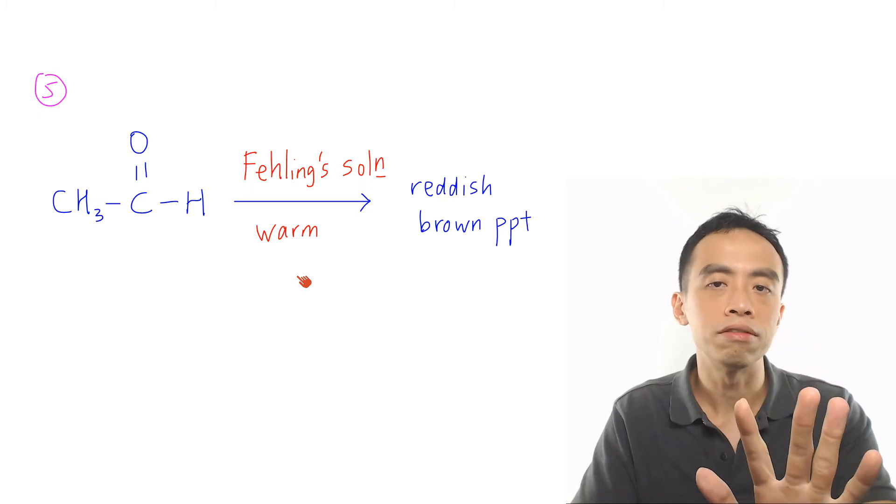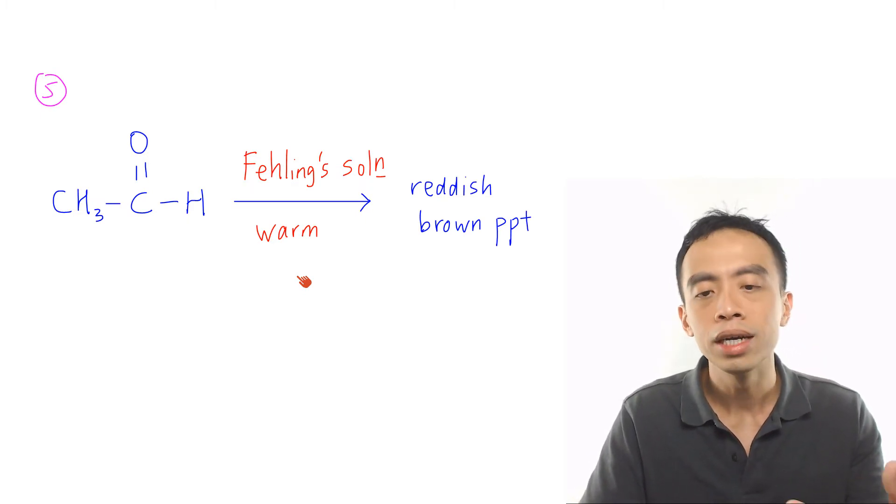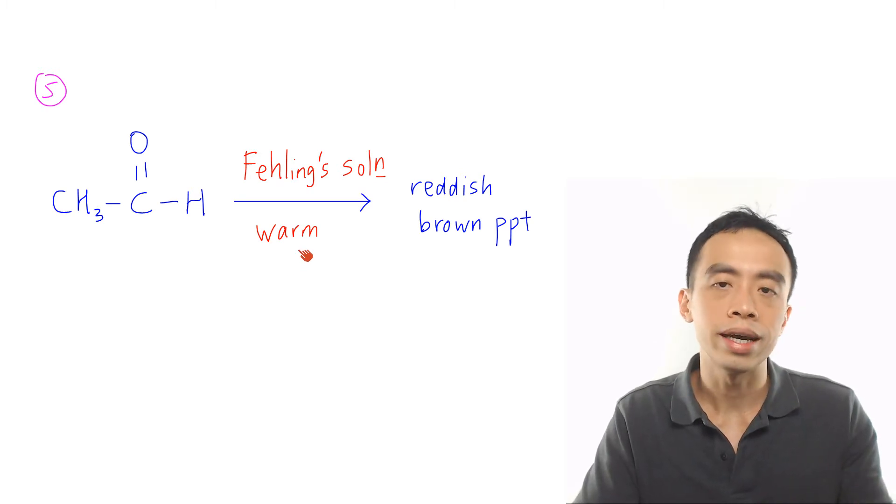Must-know reaction number 5 for aldehyde would be the oxidation of aldehyde in alkaline medium to give us our reddish brown precipitate. Now this is done using Fehling solution warm. Take note we can use this as a distinguishing test for aldehyde functional group.